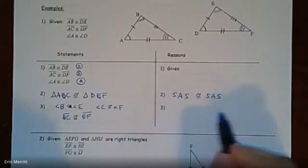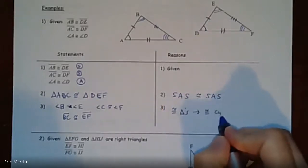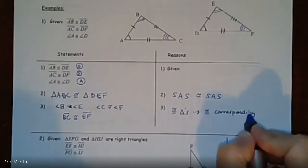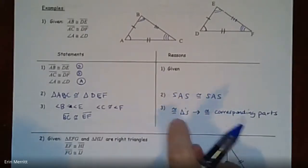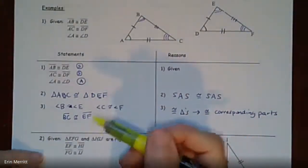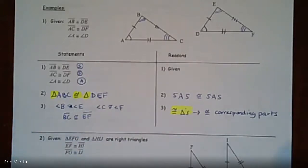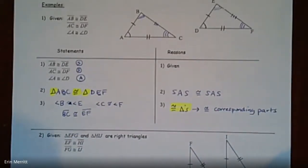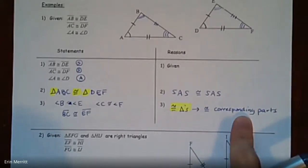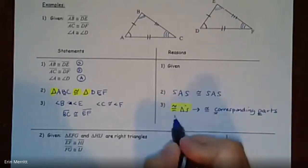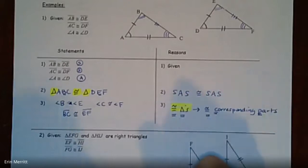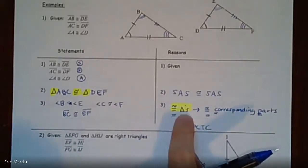The reason we can say those additional parts are congruent is that congruent triangles have congruent corresponding parts. Rather than saying 'sides and angles,' we just say 'parts' to cover everything. You can abbreviate this as CPCTC — corresponding parts of congruent triangles are congruent. It's worded a little differently but means the same thing. That's why once the triangles are proved congruent, all the matching pieces must be congruent.